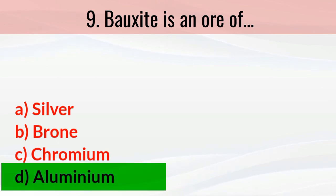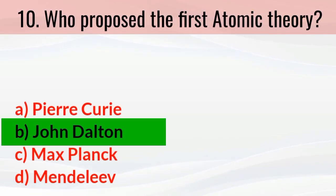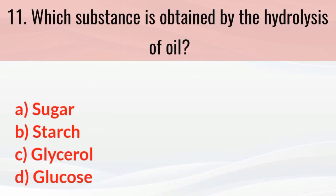Bauxite is an ore of which element? The right answer is aluminium. Who proposed the first atomic theory? The right answer is John Dalton.